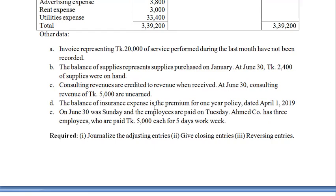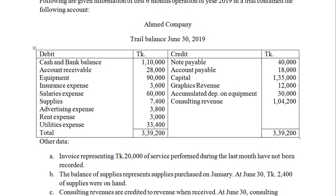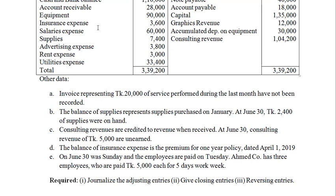The balance of insurance expenses is the premium for a 1-year policy dated 1 April 2019, and the insurance premium is the premium for 1 April 2019. As you can see, the balance of insurance is the premium for 1 April 2019, and the insurance premium is the premium for 3 months.